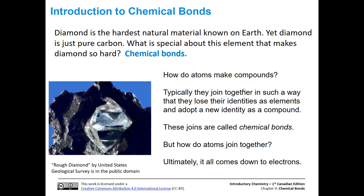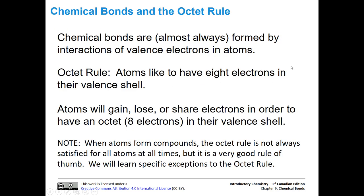The first thing we need to do is understand electrons in atoms so that we can understand how these various atoms will join together, form bonds, share electrons, and form compounds. Chemical bonds are almost always formed by valence electrons interacting with each other. The goal is to get eight electrons around each atom in the valence shell — that's called the octet rule. Atoms like to have eight electrons in their valence shell, all except for hydrogen, which is satisfied with two.